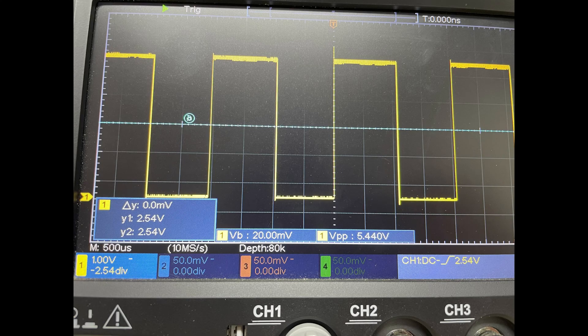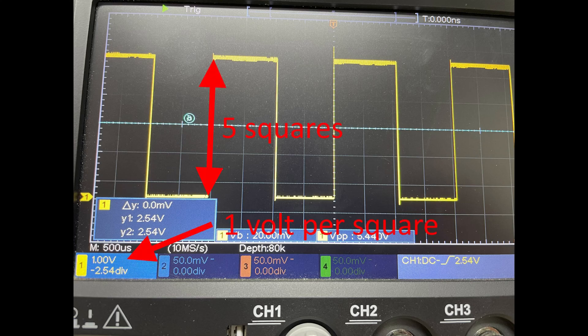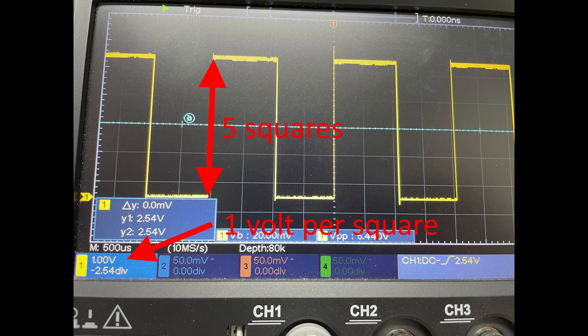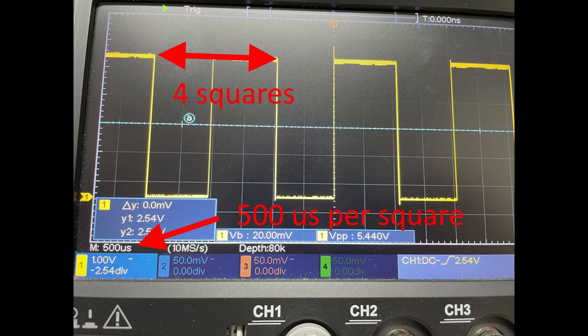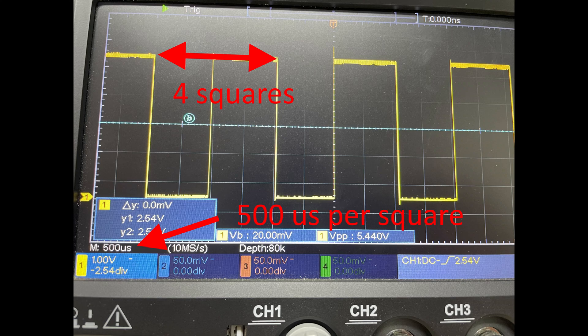A closer look at the oscilloscope because my webcam can't handle it that good. We can see here that the signal is about 5 volts, top to bottom. The width of the signal is 2 milliseconds, making this a 500 Hertz signal.